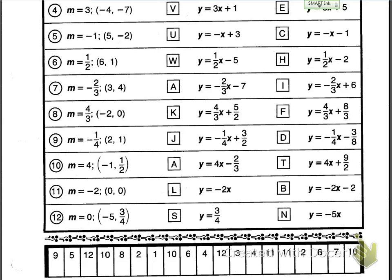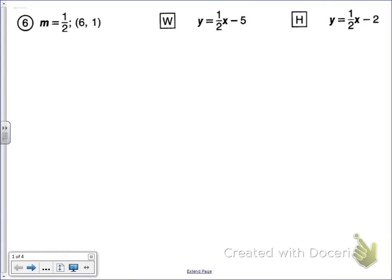Rather than doing all the work and trying to crowd it on this worksheet, I've already made individual pages for us. We'll look at number six first. So m is one-half, and the point it goes through is six comma one. Remember, slope-intercept form, or the equation of a line, is y equals mx plus b.